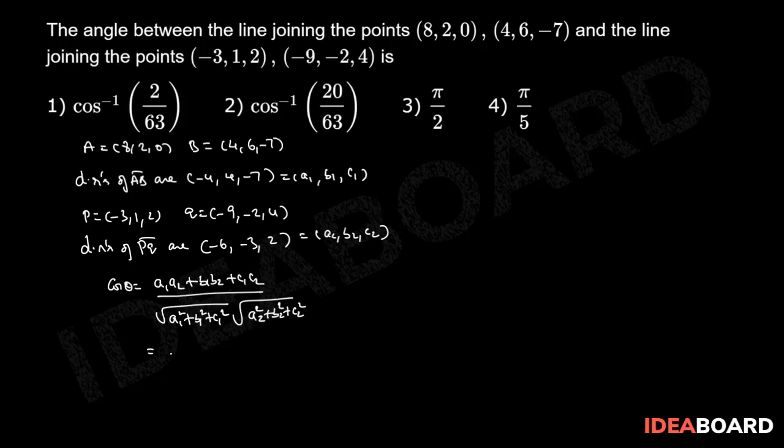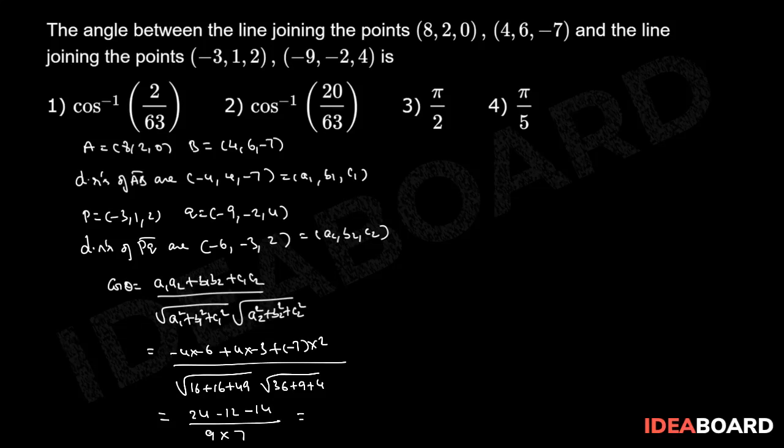Now this equals (-4)(-6) plus (4)(-3) plus (-7)(2) divided by square root of (16 plus 16 plus 49) into root of (36 plus 9 plus 4). That equals 24 minus 12 minus 14 by 9 into 7. That equals -2/63.